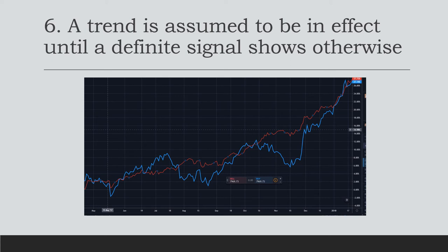Earlier we discussed that averages must confirm each other — if one goes down, the other must as well to show a change in the trend. There are multiple times in this chart where the transportation average drops and you might think it's going into a bear market, but the industrial average is still climbing, showing no change in the trend. And as you can see, the transportation average continued climbing and going up. Find indicators and market averages that show correlation with whatever commodity or security you're trading and use those with this tool to your advantage.